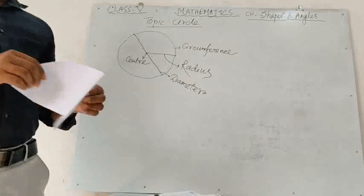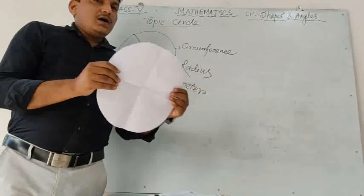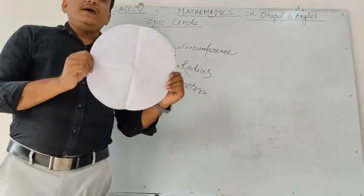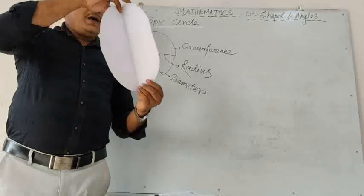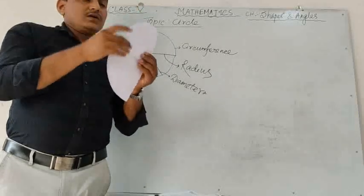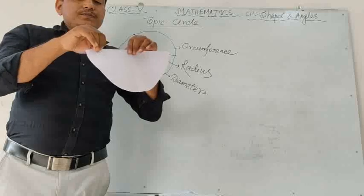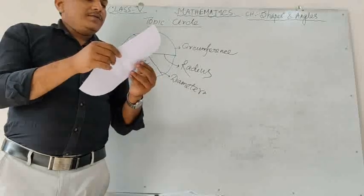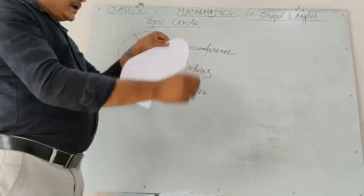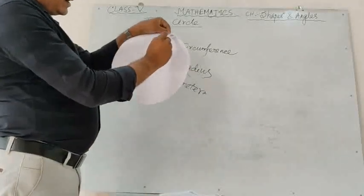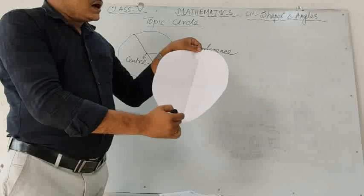I have cut paper in the shape of a circle — it is a circular shape. Now, if I fold it and make a scratch, you will get a line here. This line is called the diameter of the circle.